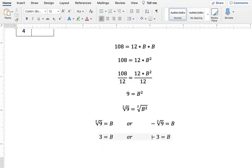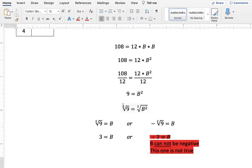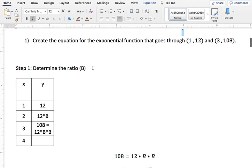Now, the only thing is that since this is an exponential function, our B cannot be negative. So therefore, this one is not true. This one right here is going to be not true, because our B cannot be negative. So we have now solved for B. B is therefore positive 3. So there's your step one. We just determined our ratio, or our B.